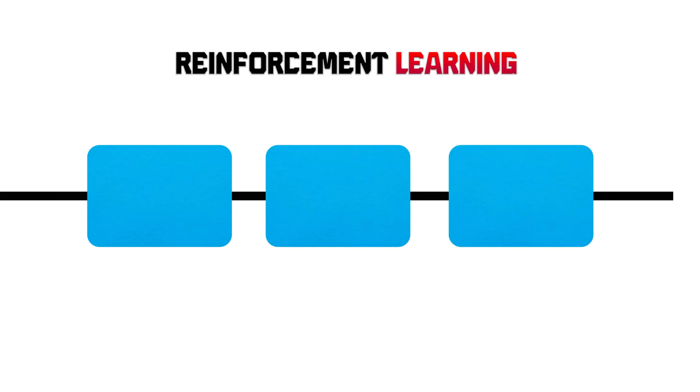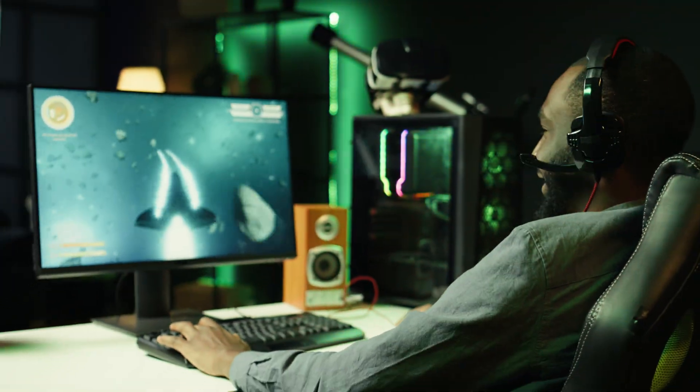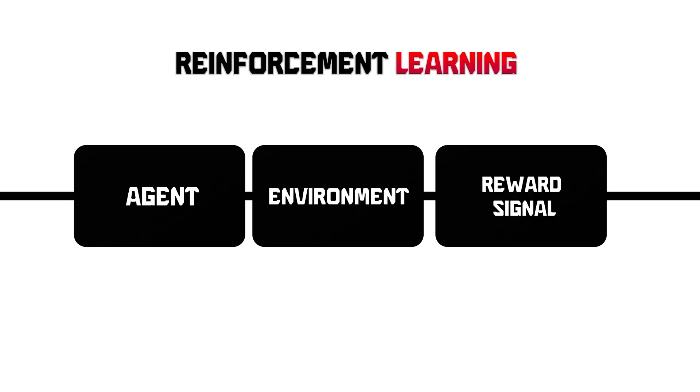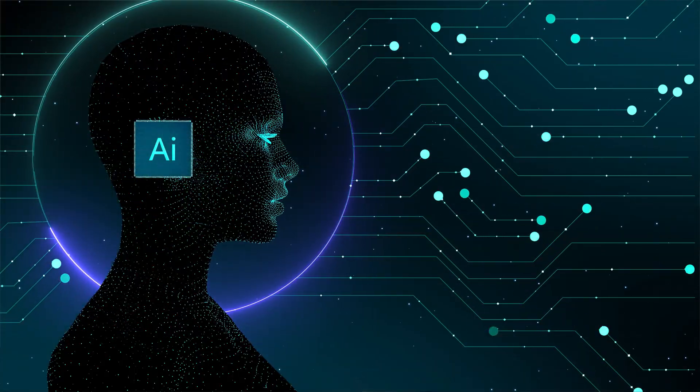Technically, reinforcement learning revolves around three key components. First, the agent — the decision maker, the learner. Second, the environment: the world it interacts with. This could be a video game, physical robot surroundings, or even the stock market. And third, the reward signal — a number that tells the agent how good or bad its action was. The agent's goal is actually quite simple but complex to achieve: maximizing cumulative reward over time, not just instant gratification but long-term payoff.